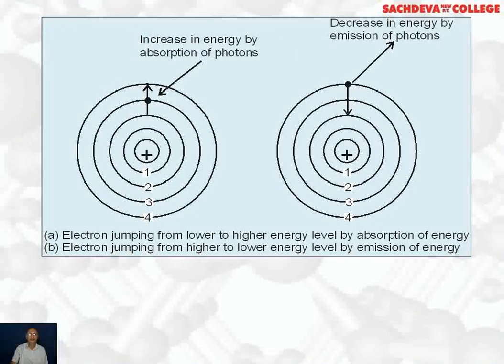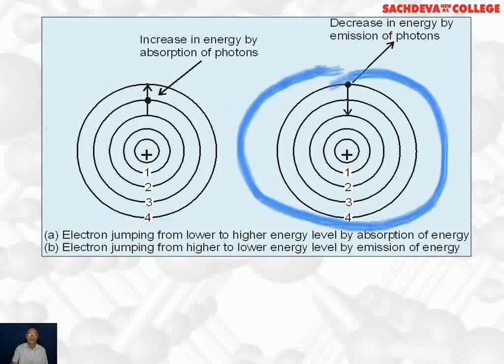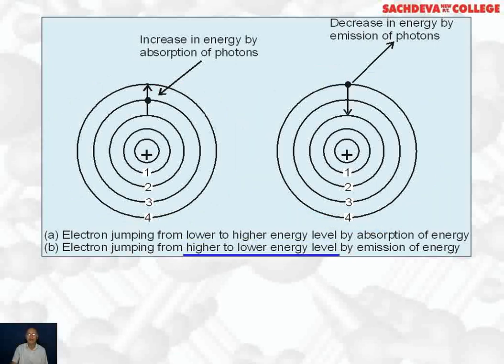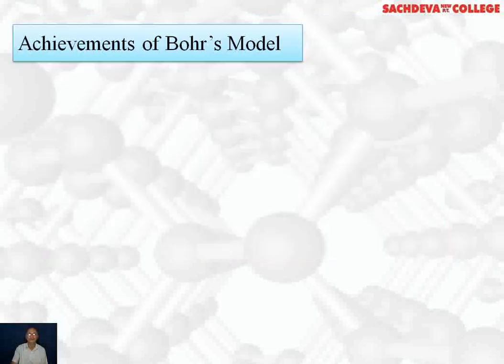These are the orbitals shown in the first one. Electrons jumping from lower energy level to higher energy level by absorption of energy. Whereas in the second, electron is jumping from higher to lower energy level by emission of energy.